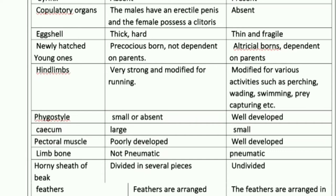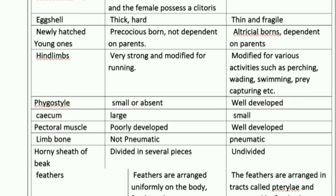Newly hatched young ones in Ratitae are precocious — meaning they are not dependent on parents. As soon as they are born they are capable of eating, walking, and feeding by themselves. In Carinate, the young are altricial — meaning they are dependent on parents for eating, feeding, walking, and learning everything.